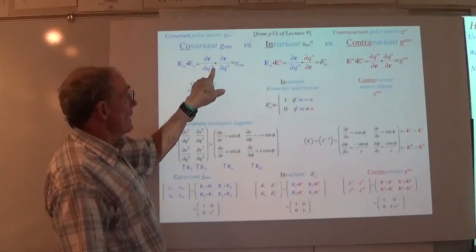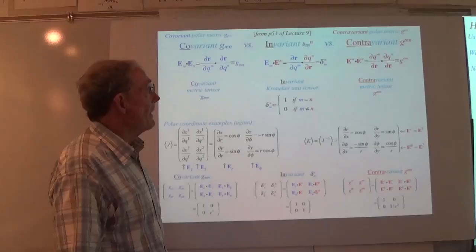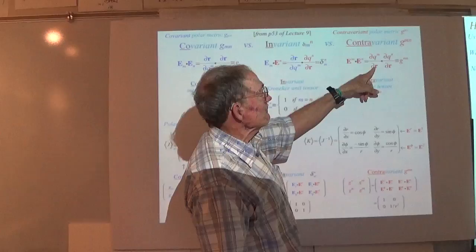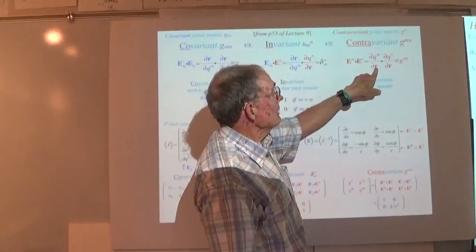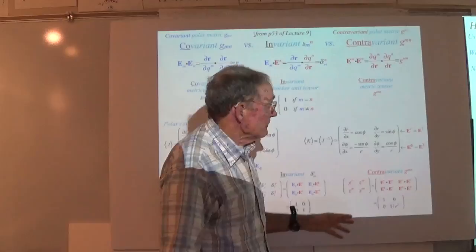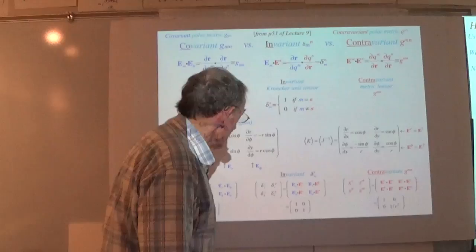Now we're dealing with the inverse — the Jacobian components that have the generalized coordinates in the numerator, and we're doing a differentiation with respect to r, which is a gradient. That's giving me this result which is 1 over r-squared instead of r-squared in the second component of the metric. This is an orthogonal coordinate system — we're not seeing anything off-diagonal here.